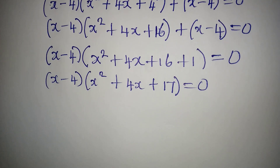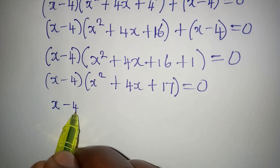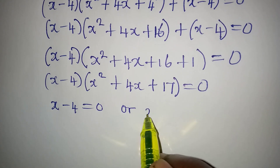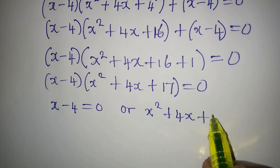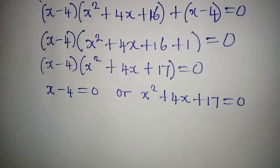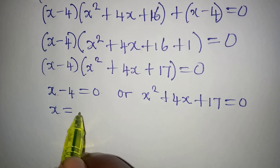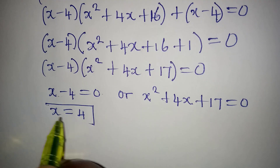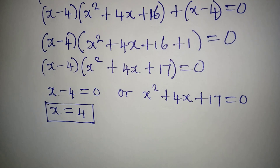Now we apply the zero product rule. So we get x minus 4 equal to 0, giving x equals 4, or x squared plus 4x plus 17 equal to 0. This first value, x equals 4, is a real solution.